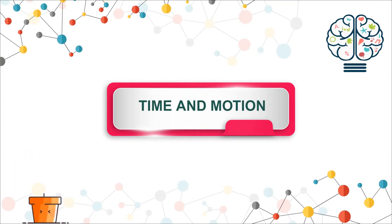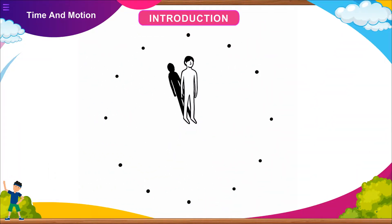Time and Motion. Introduction: Time is indefinite, continued progress of existence and events in irreversible direction. It is a gap between two events.